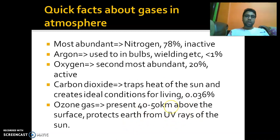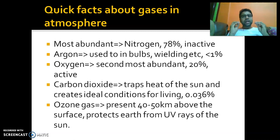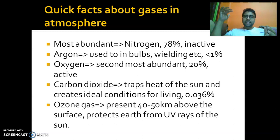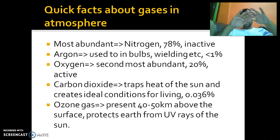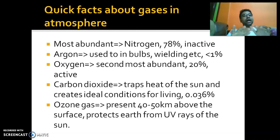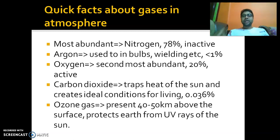Ozone gas is another very important gas, present 40 to 50 km above us. The very important role that ozone plays is that it protects us from the harmful ultraviolet rays of the sun. When the sun's rays come to the earth, they bring not only light and heat but also very harmful ultraviolet rays. The ozone layer acts as a natural sunscreen — a natural umbrella that protects the earth from harmful solar radiations.